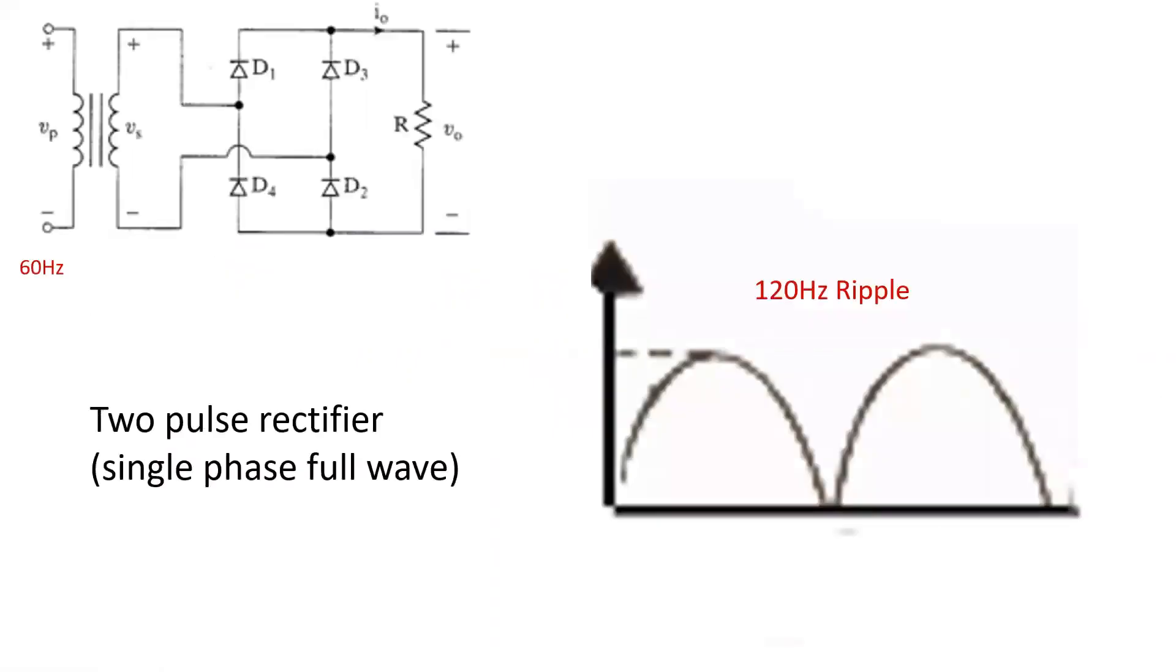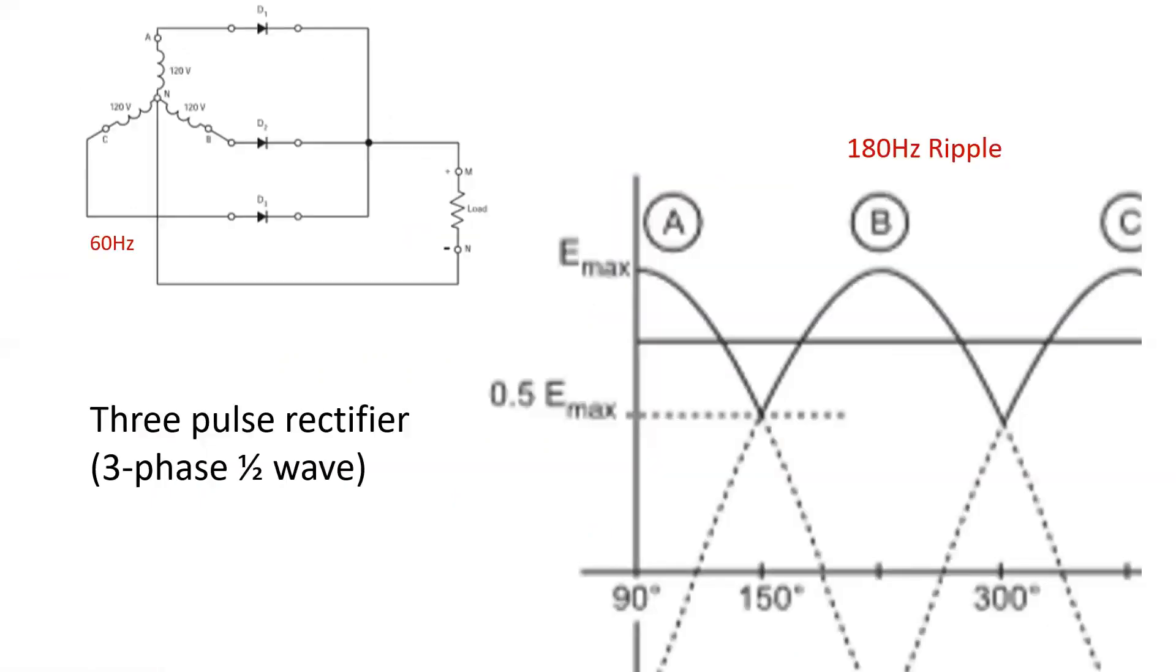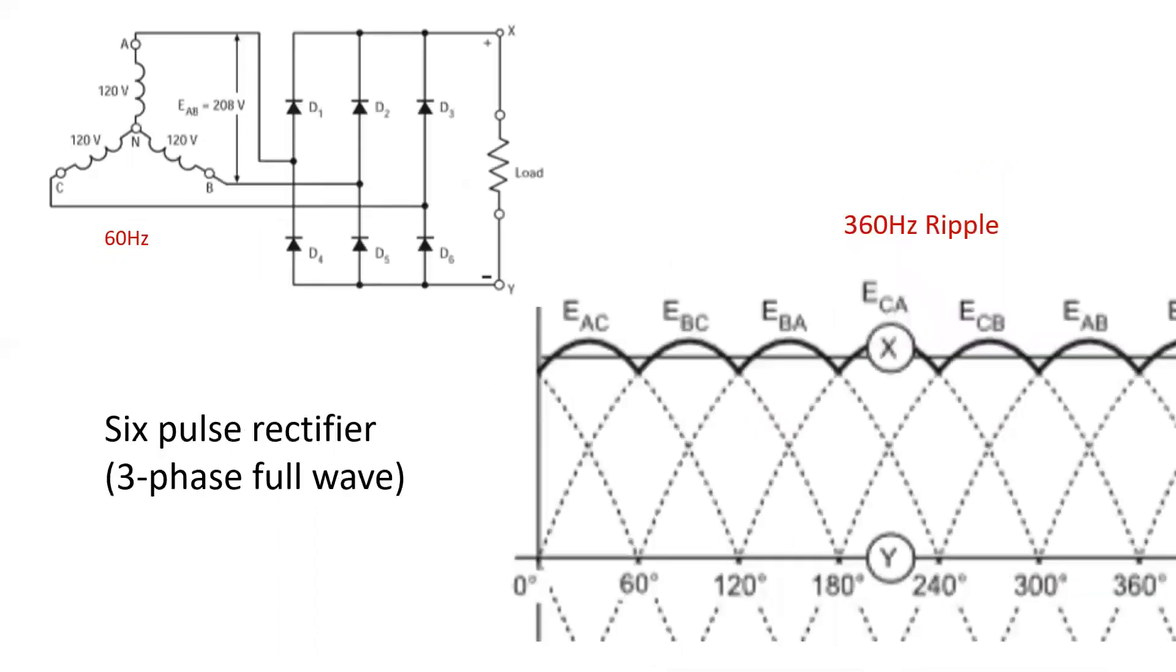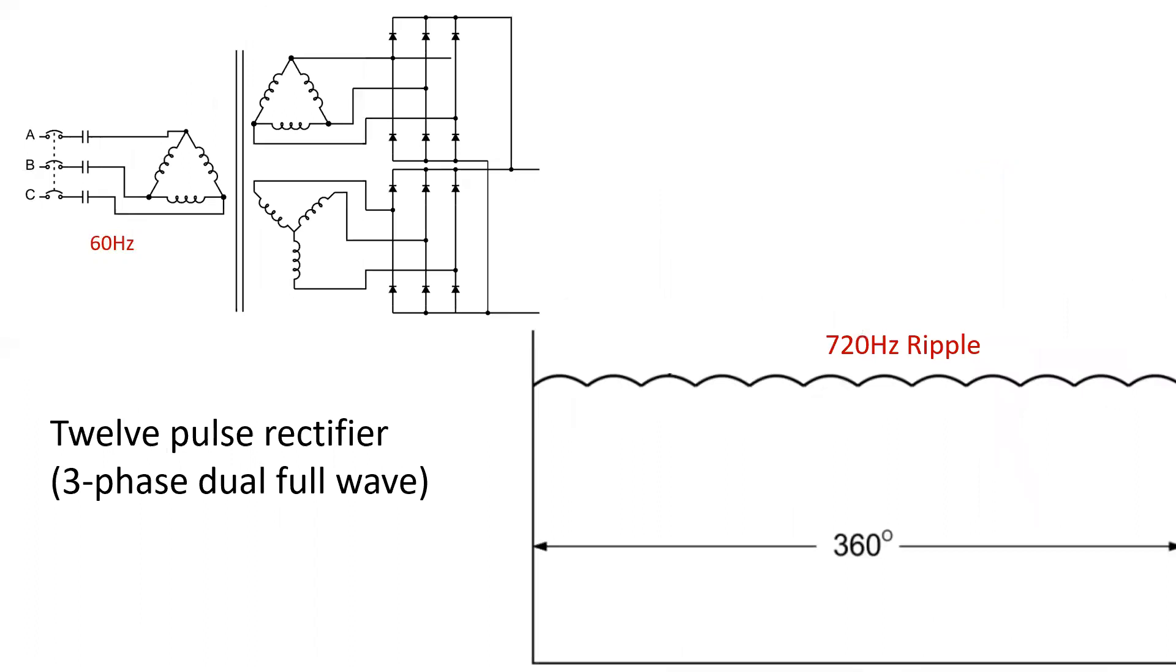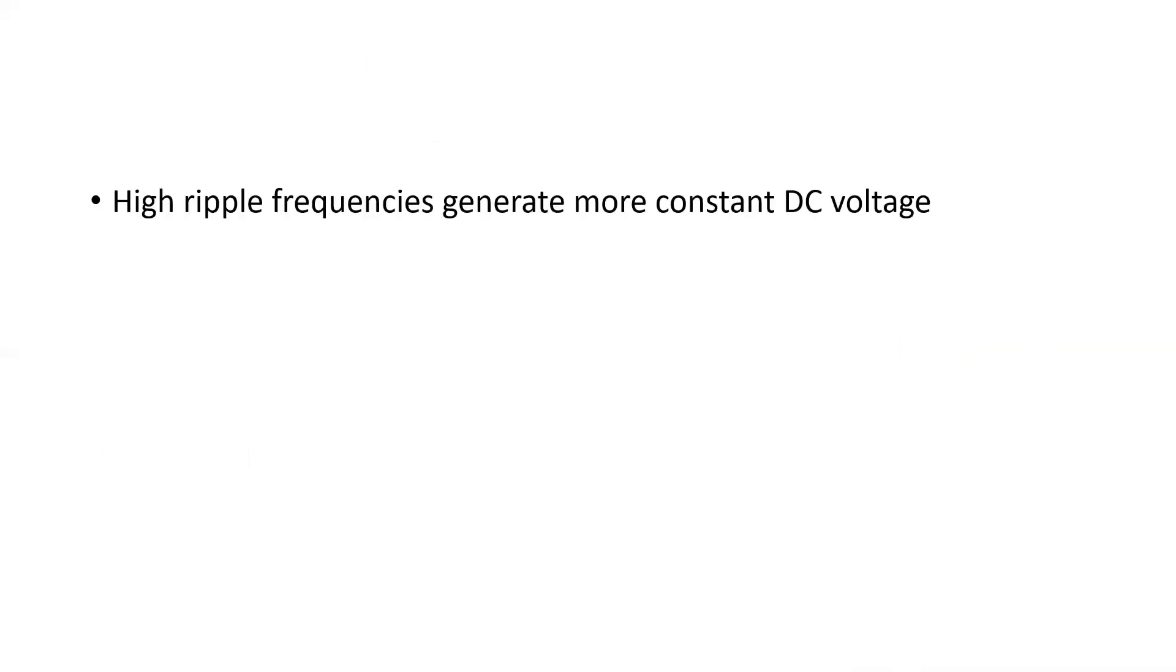We've already looked at two-pulse rectifier, which would be a single-phase full-wave rectifier. We have 120 hertz ripple. With three-pulse rectifier, we go up to 180 hertz ripple. With six-pulse rectifiers, or three-phase full-wave, we go to 360 hertz ripple, and we even have systems that require the use of a separate transformer, which would be a 12-pulse rectifier. This is a far more complicated system, one that we do not delve into, but the ripple frequency has increased substantially, up to 720 on a 60 hertz system. The end result is that high ripple frequencies generate more constant DC voltage and are seen as a good thing.